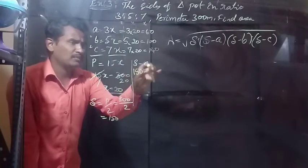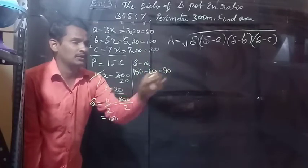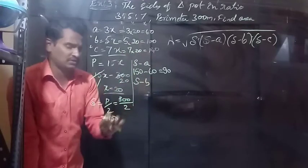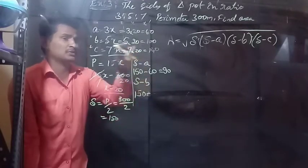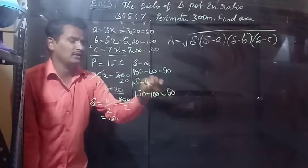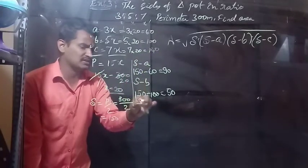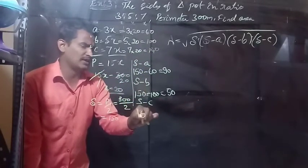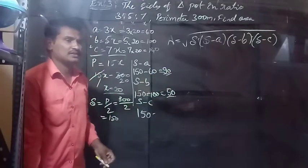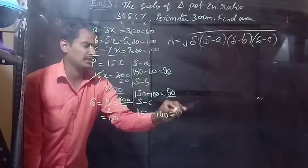S = perimeter/2 = 300/2 = 150. So S−a = 150 − 60 = 90. S−b = 150 − 100 = 50. S−c = 150 − 140 = 10.